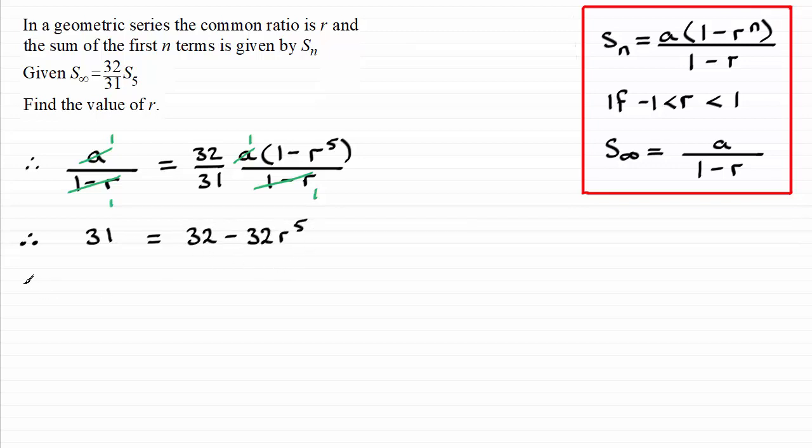And now if I rearrange this by adding 32 times r to the power of five on both sides and subtract 31 from both sides, then I get 32 minus 31 is 1. And divide now by 32, so you're left with r to the power of five equals 1 over 32.